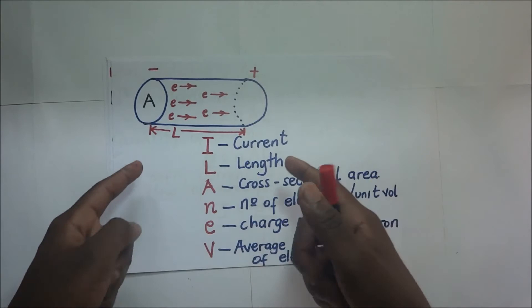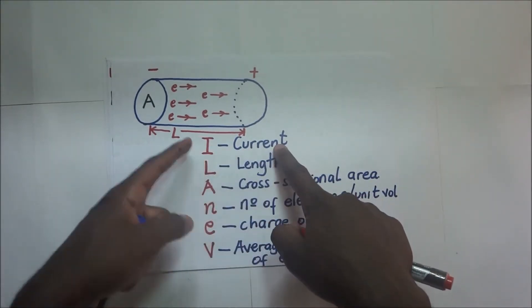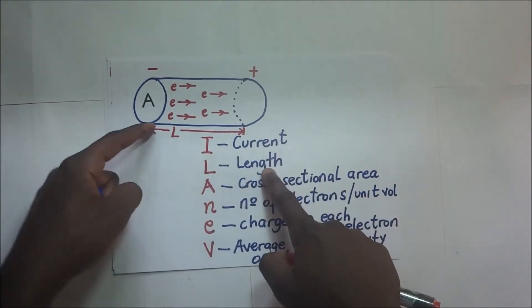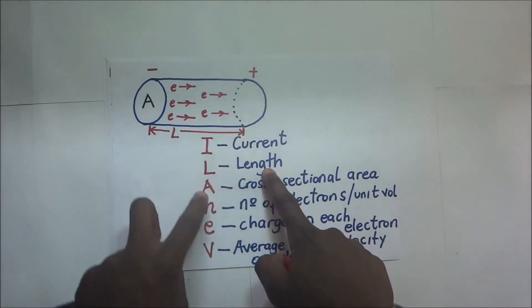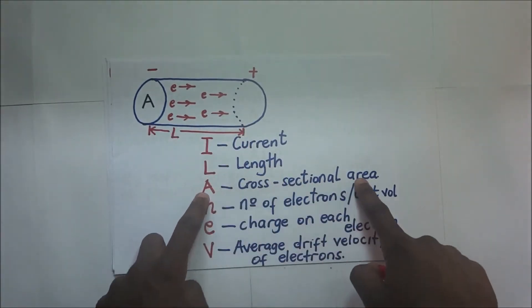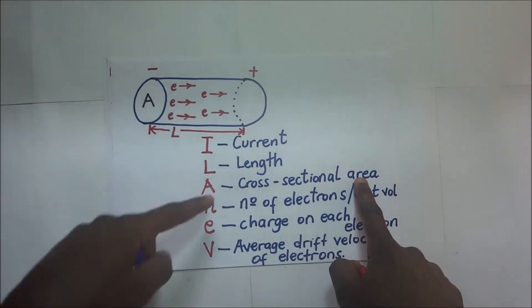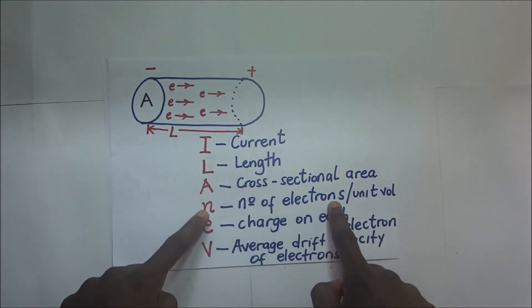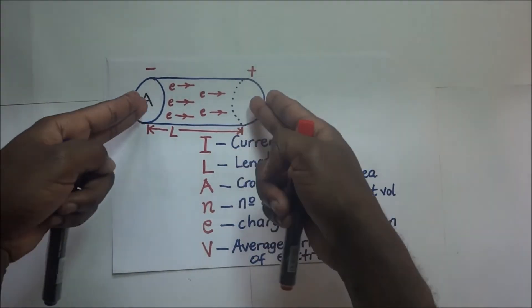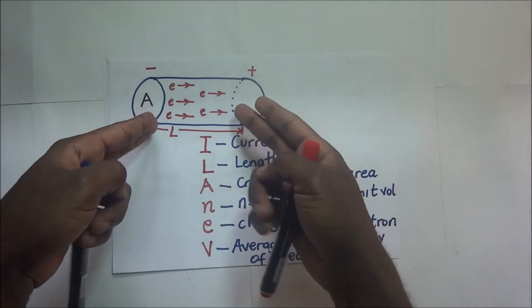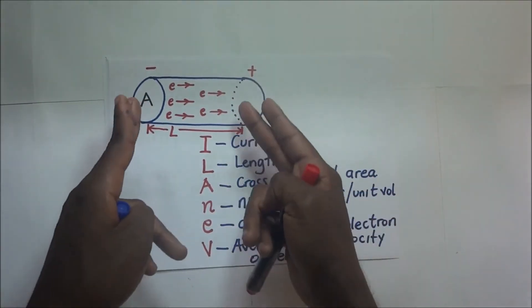So the parameters we shall be using: capital I, which represents the current moving in this conductor; the length L, which is the length of the unit conductor we've chosen; A is the cross-sectional area of that conductor; and N is the number of electrons per unit volume.